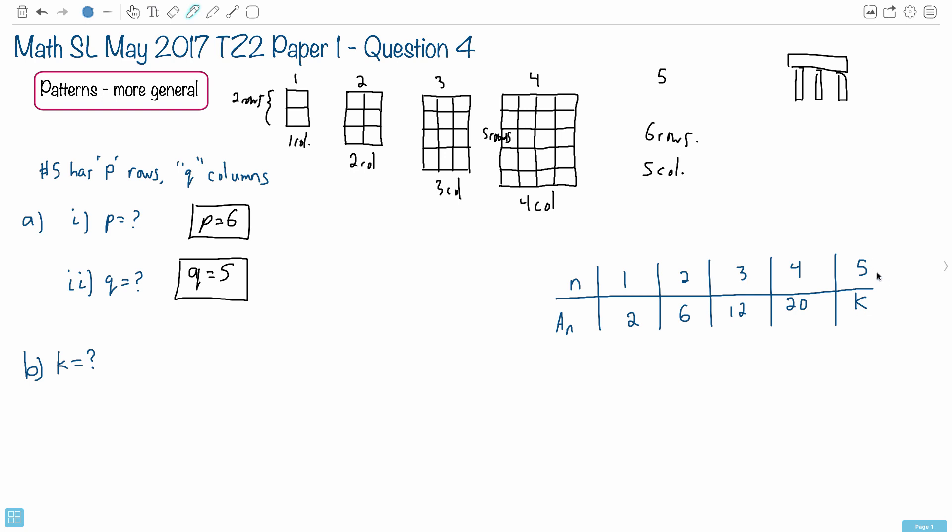So here they want you to find what is it for the fifth one. Well, we can generalize, can't we? We can say that k, which is whatever your area is in general, is always just the rows times the columns.